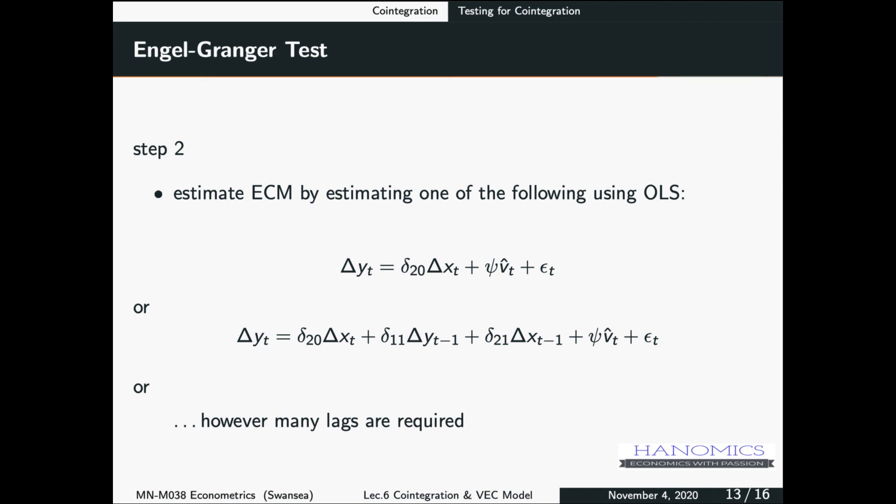So what would we do then, we could just obtain the error correction model. This is exactly the same structure we did, and in this case, we could just use OLS to estimate this model. Why are we using OLS? You see all variables I0, because this is the change in Yt, so if Yt is I1, then delta Yt will be I0. If Xt is I1, then delta Xt will be I0. That means we can use OLS, there is no problem.